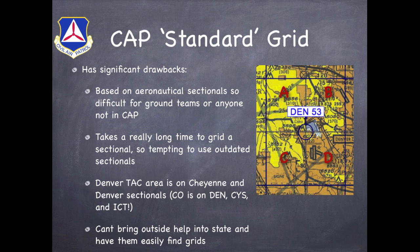Furthermore, the Denver TAC area itself, and Colorado in general, actually cover several different sectionals. So if I'm trying to find locations throughout our state, I may be looking on the Denver, the Cheyenne, or the Wichita sectionals to find them. And finally, it's very difficult to bring in outside help when we're using this system. Because it's so difficult to find these grids, if we're bringing in somebody on short notice who needs to find a grid, they either need to be provided with a gridded sectional, or they're just going to have to sit there for a few hours and draw everything out.